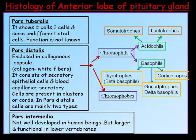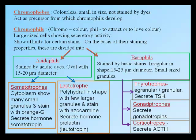Histology of the anterior lobe: pars tuberalis shows alpha cells, beta cells, and some undifferentiated cells with unknown function. Pars distalis is enclosed in a collagenous capsule and consists of secretory epithelial cells and blood capillaries. The secretory cells are present in clusters or cords and are mainly of two types: chromophils and chromophobes. Chromophils are divided into acidophils and basophils; acidophils into somatotrophs and lactotrophs; basophils into thyrotrophs, gonadotrophs, and corticotrophs.